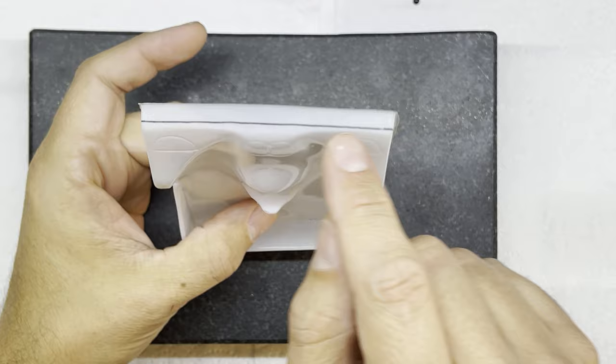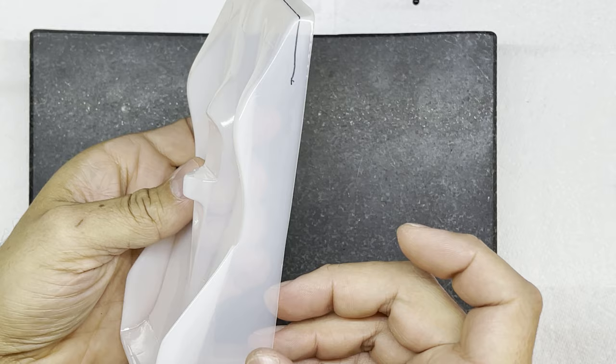There we go, so we have a nice straight line around the front of the body shell and down the sides of the body shell.